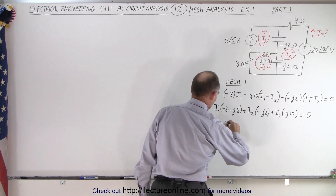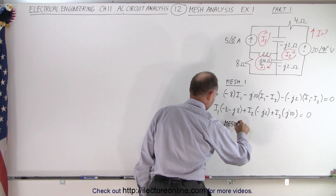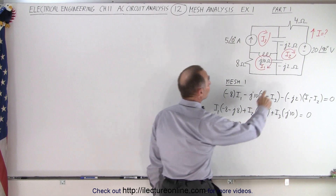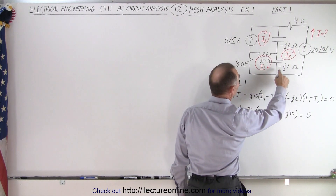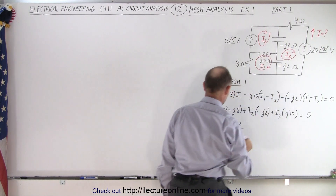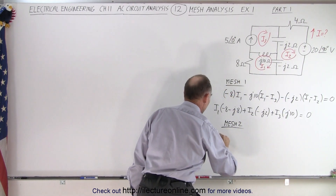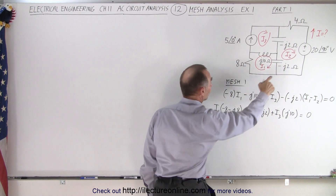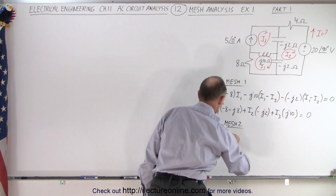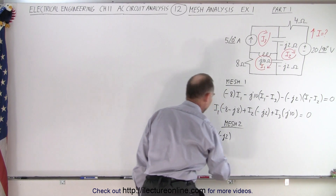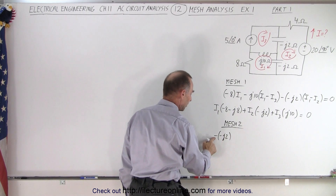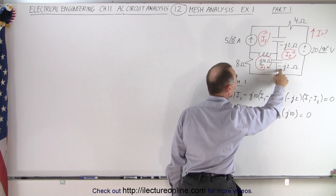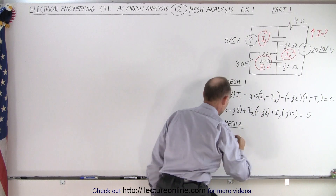Now mesh 2. Starting at this corner, let's go across the capacitor — that's a voltage drop. So we have a drop of minus J2. This is the voltage drop, and we have a minus reactance, and we multiply it times I2.